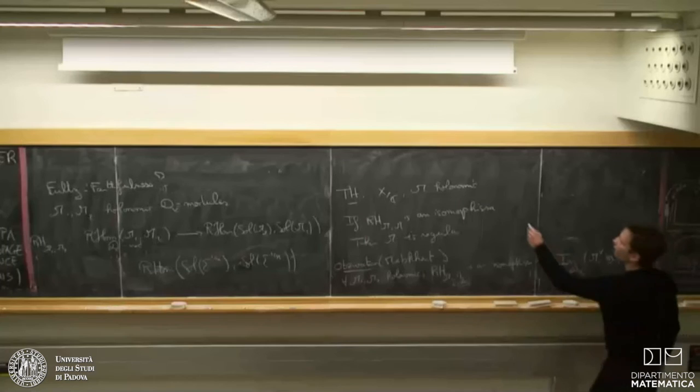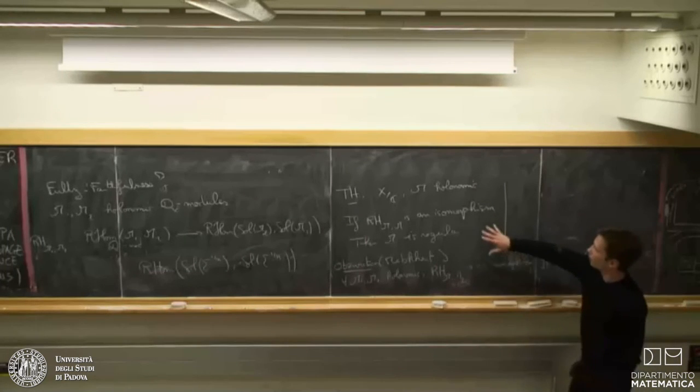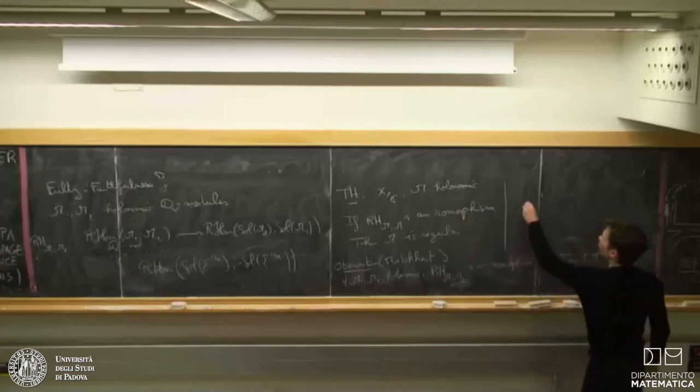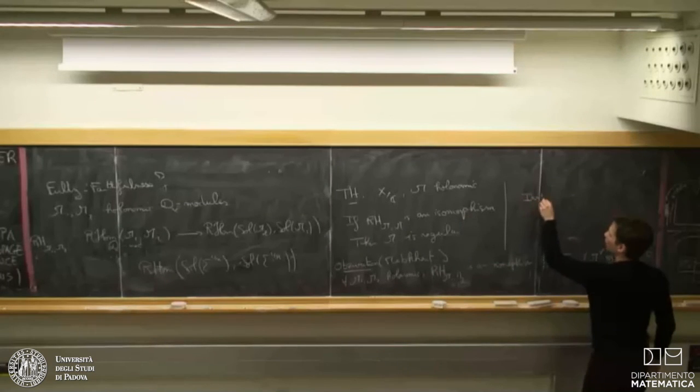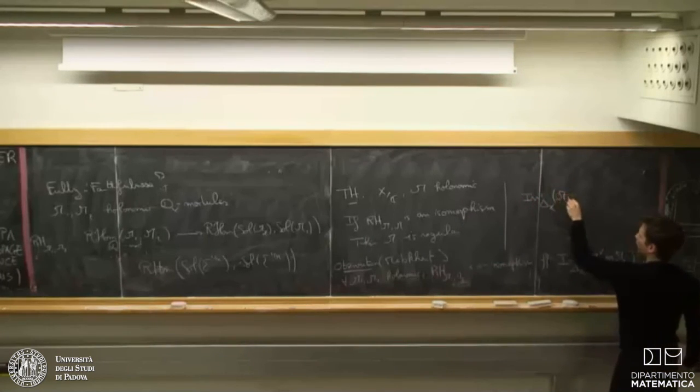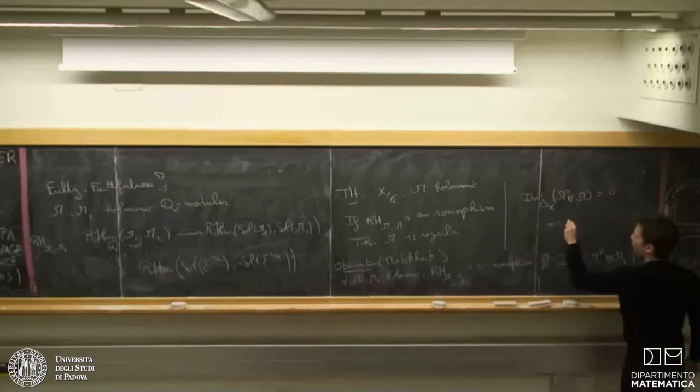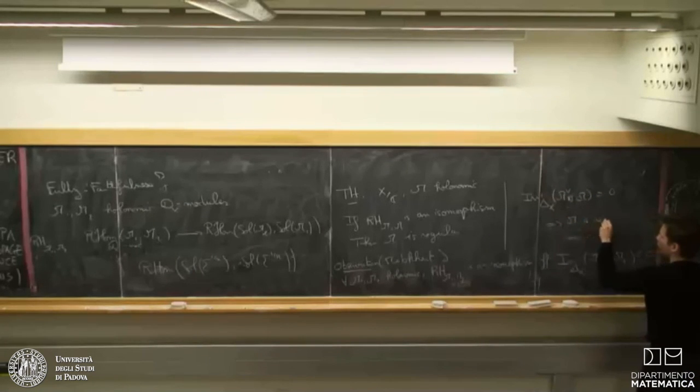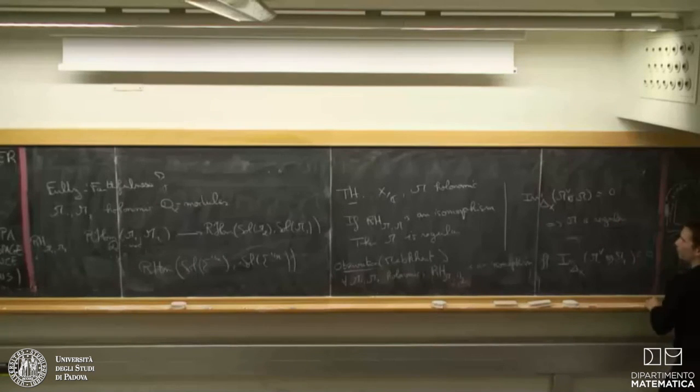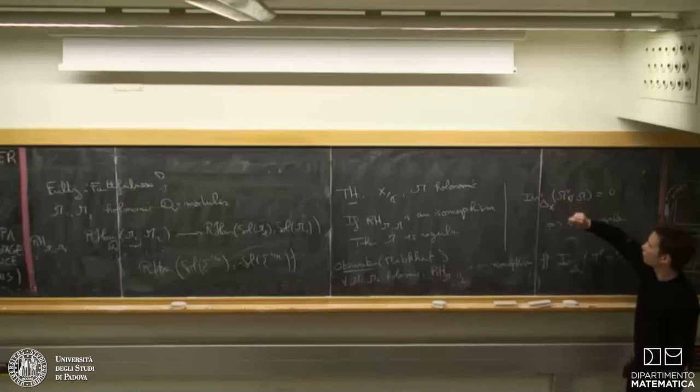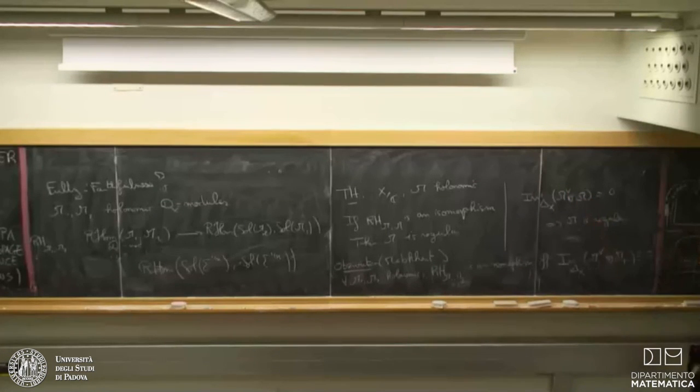So, actually, the statement which is behind this one is that if for M given, if the irregularity sheaf of this module is zero, then M is regular. And this is much better because this guy, this is really something you can work with. Sometimes you can even compute it in dimension one. I will stop here. Thank you for your attention. Thank you.